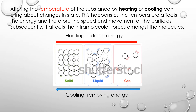Altering the temperature of a substance by heating or cooling can bring about changes in state. This happens as the temperature affects the energy, and therefore the speed and movement of the particles. Subsequently, it affects the intramolecular forces amongst the molecules. As you can see in the diagram, if you heat or add energy, you will overcome the intramolecular forces. The particles will gain energy, vibrate much faster, and move from solid into liquid and then gas. But if you start cooling them, the intramolecular forces will increase and from gas we get liquid, and from liquid we get solid.